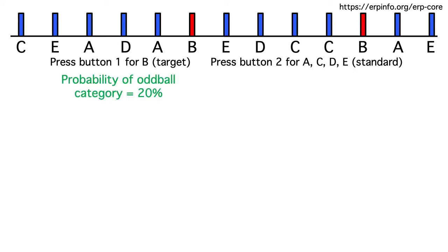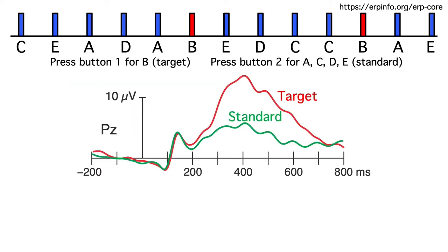The target category was 20% probable and the non-target category was 80% probable. The target is an oddball and the non-targets were standards. As in thousands of prior experiments, the rare target elicited a much larger P3 than the frequent standards.